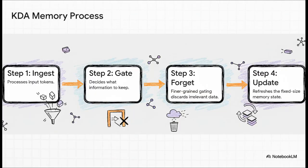The process itself is just brilliant in its simplicity. First, it takes in the information. Then, through this gating step, it decides what's actually important. Then, and this is the crucial part, it precisely forgets the irrelevant stuff before it updates its compact, fixed-sized memory. It's kind of like a smart student who constantly refines and summarizes their notes instead of just adding more and more pages.